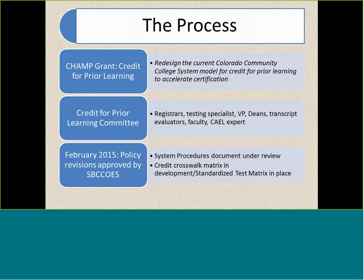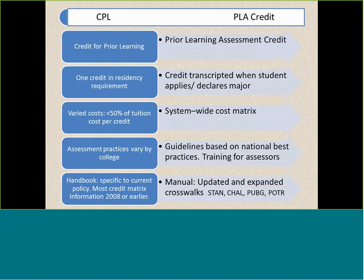First we put together a credit for prior learning committee. We had a lot of representation — not a lot of faculty, but many people doing the job on the ground, typically registrars and advisors. We did have some faculty and some experts who helped us with policy writing. In February of last year, we submitted a policy to the State Board of Community Colleges and Occupational Education, and they accepted the policy changes. We also started creating a systems procedures document, which just got finished — it took a while figuring out rules for 13 institutions. We're also working on a credit crosswalk matrix to create automatic crosswalks instead of having people continuously evaluate.